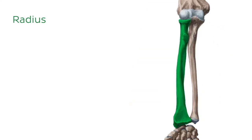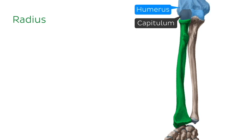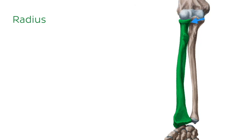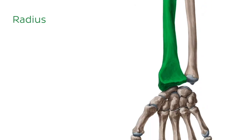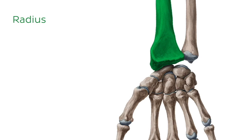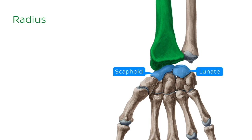As you can see in the illustration, it articulates proximally with the humerus, specifically at the capitulum. It also articulates both proximally and distally with the ulna. At its distal end, it articulates with the two lateral bones of the proximal carpal row, which are the scaphoid and lunate bones.